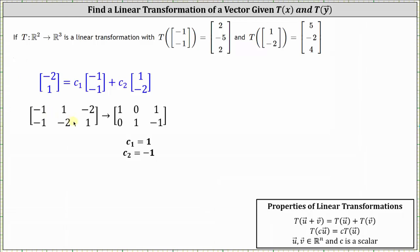The first row of the augmented matrix is (-1, 1, -2), since the first equation is -1·C₁ + 1·C₂ = -2. The second row is (-1, -2, 1), because the second equation is -1·C₁ - 2·C₂ = 1. Notice how we are changing the order of the equations to write the augmented matrix.